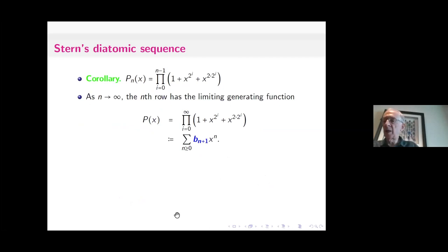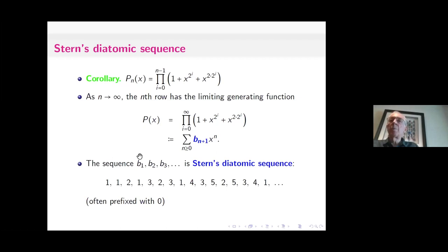A nice property of Stern's triangle that has no counterpart for Pascal's triangle is that the nth row stabilizes, meaning that for any k, the kth entry in the nth row becomes a constant for n sufficiently large. If we look at the generating function for these stable values, it's obviously just what we get from p_n of x by letting n go to infinity. So it'll be this infinite product: 1 plus x to the 2 to the i plus x times x to the 2 times 2 to the i. I'll call the coefficient of x to the n, b_{n+1}.